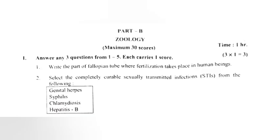Question 1: Write the part of the fallopian tube where fertilization takes place in a human being.